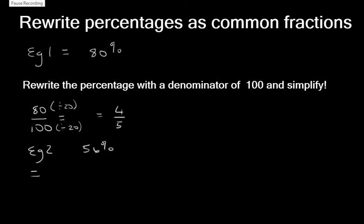Now let's look at 56%. We write that as 56 over 100. We need to look for the highest common factor, the number that divides into both 56 and 100, and we find that it's 4. 100 divided by 4 is 25, and 56 divided by 4 is 14. This leaves us with an answer of 14 over 25.